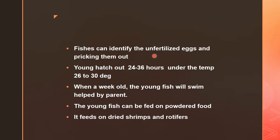Young fish hatch out in 24 to 36 hours under a temperature of 26 to 30 degrees. When about a week old — after 7 to 8 days — the young fish will swim with the help of the parents, showing parental care by both male and female. The young fish can be fed on powdered food after fertilization, and also on dry shrimps and rotifers. This is about the morphological study of egg-laying fish — the first example being the angelfish, covering characters, food and feeding habits, and breeding.